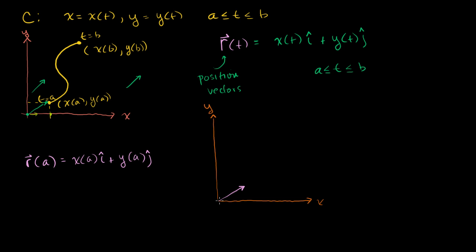It's going to be a vector that looks something like that. Just like that. It's a vector, it's a position vector. That's why we're nailing it at the origin, but drawing it in standard position. And that right there is r of a.